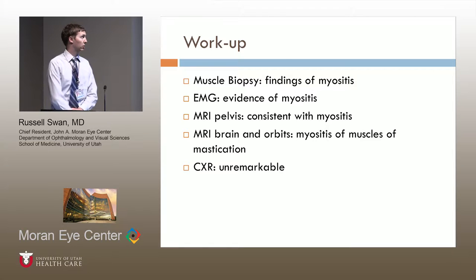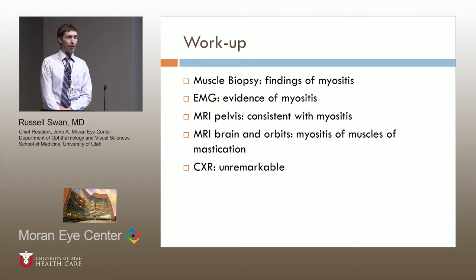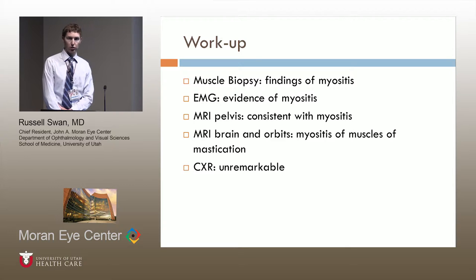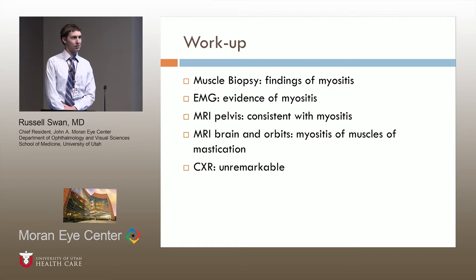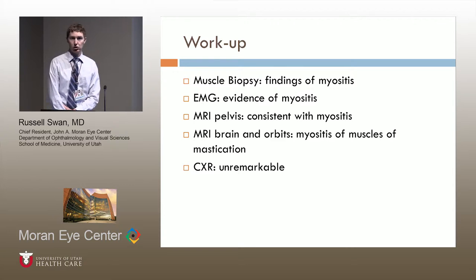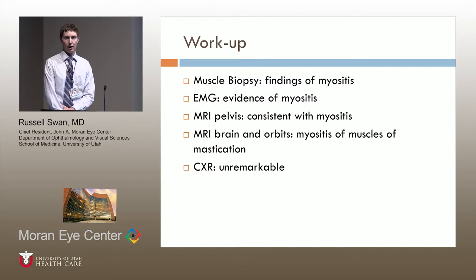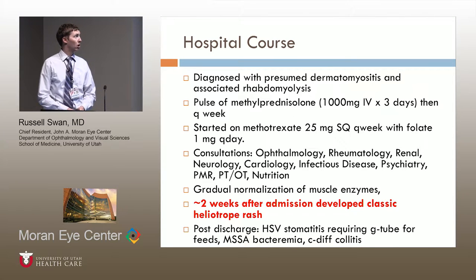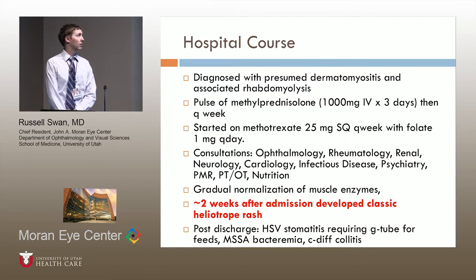Further workup for her elevated muscle enzymes included a muscle biopsy demonstrating signs of diffuse myositis, and an EMG which concurred with findings of myositis. MRI of her pelvis was consistent with myositis. MRI of the brain and orbits demonstrated myositis of the muscles of mastication and showed no evidence of optic nerve enhancement. Her chest X-ray was unremarkable. She was diagnosed with presumed dermatomyositis and associated rhabdomyolysis.